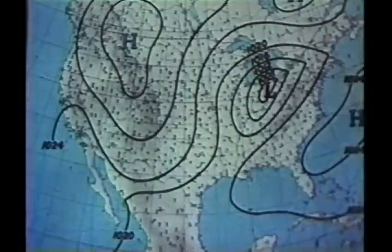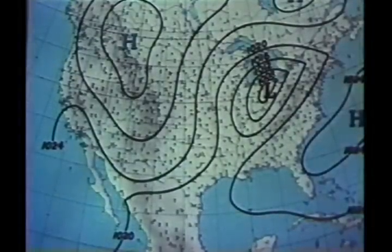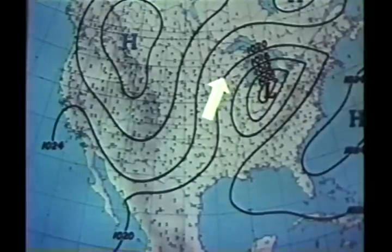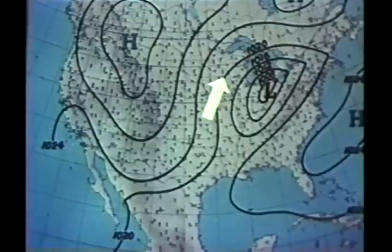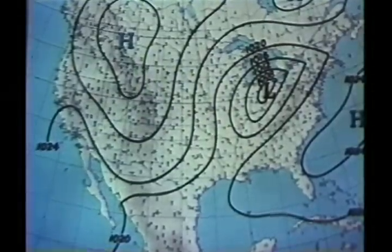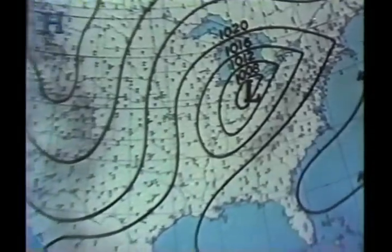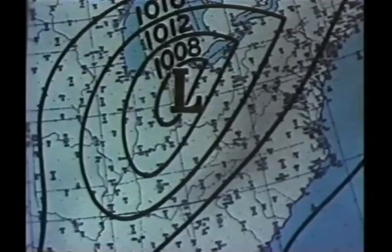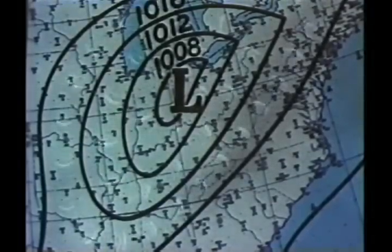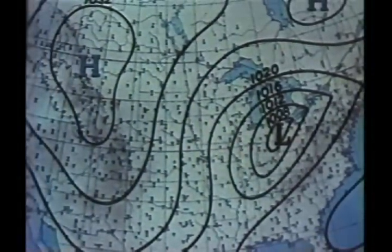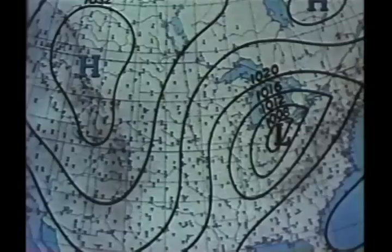Isobars spaced closely indicate a strong pressure gradient. Conversely, isobars spaced widely on the map indicate a weak pressure gradient. Closely spaced isobars, or a strong pressure gradient, are more closely associated with low pressure areas and relatively strong winds. While widely spaced isobars, or a weak pressure gradient, are more closely associated with high pressure areas and lighter winds.